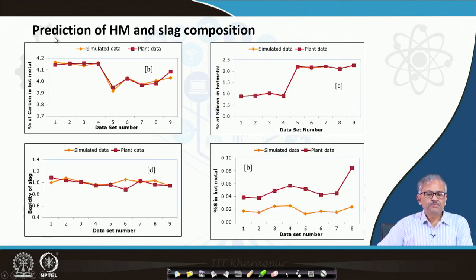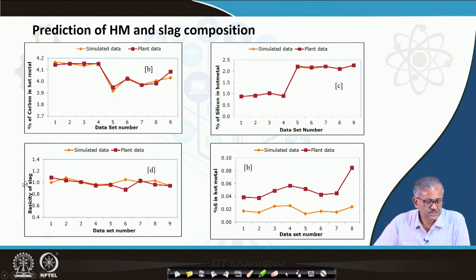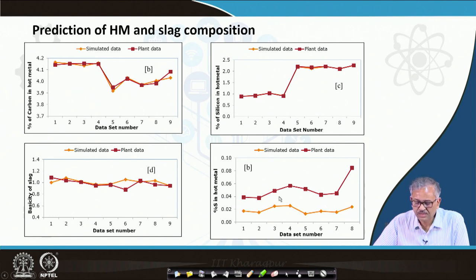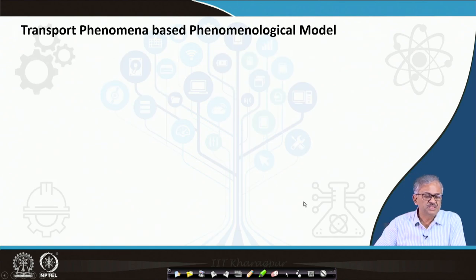For hot metal and slag composition predictions, the percentage carbon in hot metal shows a close match with different data sets, percentage silicon also shows good match, basicity of the slag matches well, but sulphur prediction shows a slight difference. Overall, the thermodynamic model performs well; only sulphur prediction is slightly off.